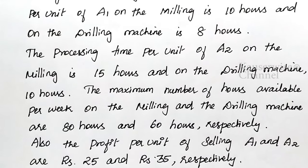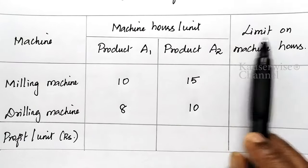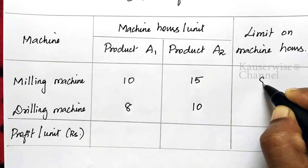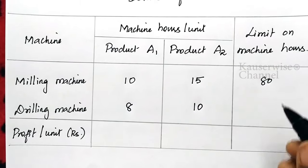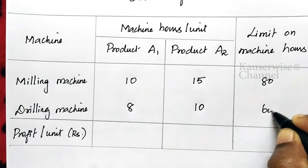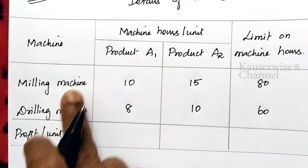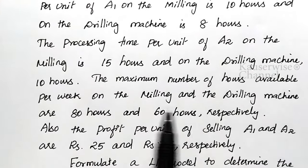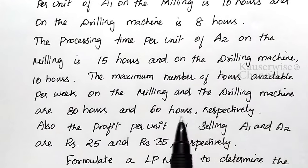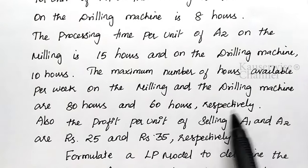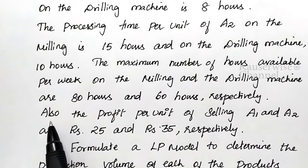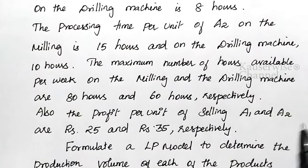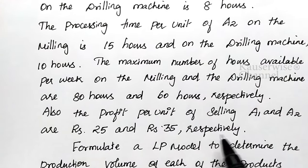This is the constraint — the limitation on machine hours. The limit on milling machine is 80 hours per week and on the drilling machine is 60 hours per week. Also, the profit per unit of selling A1 and A2 are 25 rupees and 35 rupees respectively.